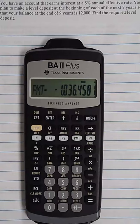Notice in this case this is negative. And we put in the future value as positive. That's because the calculator is trying to balance out money going in and money coming out. We're putting in 1,036.46 to get out $12,000 at the end of nine years.